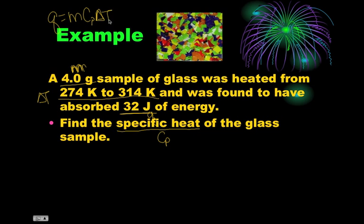Since we are solving for C sub P, I'm going to rearrange this. C subscript P - that's just the abbreviation for specific heat capacity, that's where the C comes from, specific heat capacity. So specific heat is equal to Q over M delta T. Plug in our numbers: Q is 32, mass was 4, delta T is 314 minus 274 or 40.